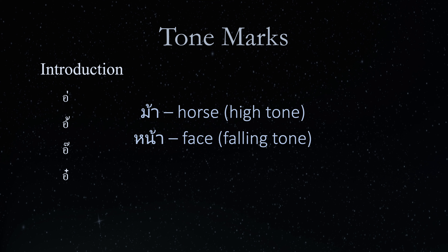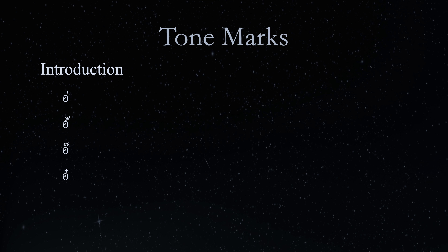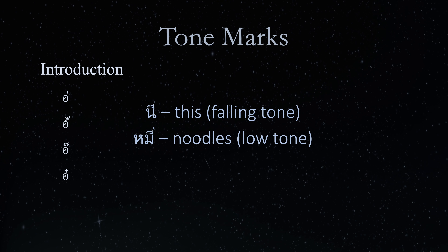We will discuss the consonant clusters in an upcoming video. If a vowel or one of the symbols of a vowel is written above the consonant, then the tone mark is written at the top right corner of the vowel or the symbol of the vowel above the consonant. For example, NI in the falling tone meaning this, and MI in the low tone meaning noodles. In both words, the tone mark MAI EIG is written at the top right corner of the vowel SARA-I.